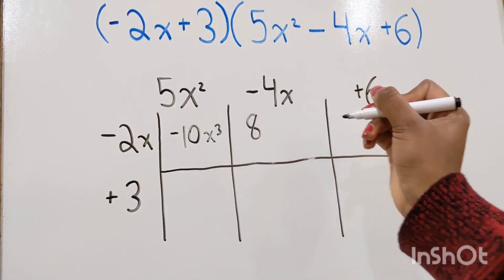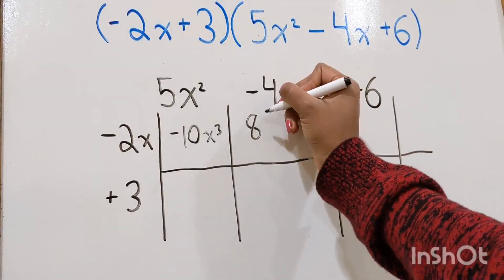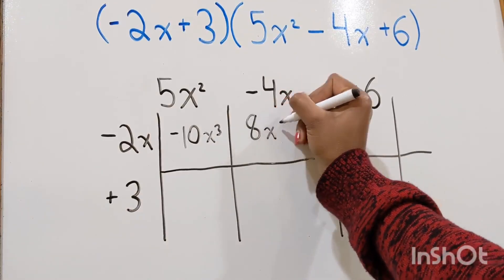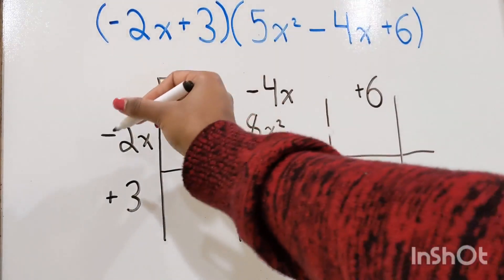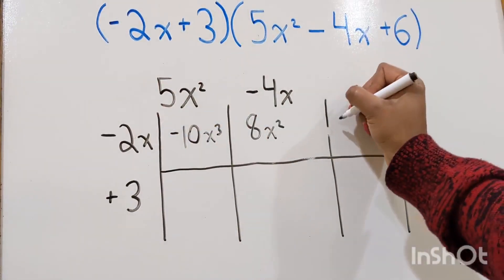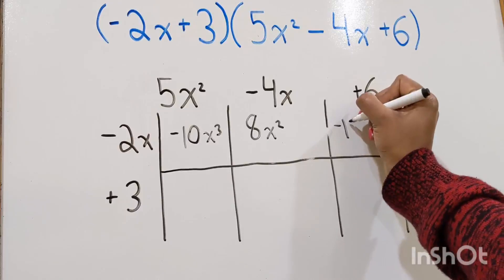Negative 4x times negative 2x is positive 8x squared. And then multiply 6 times negative 2x. So that would be negative 12x.